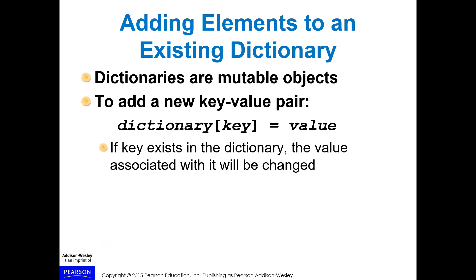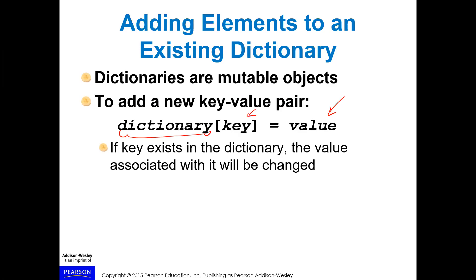You can add elements to a dictionary at any time. To add a new key-value pair, grab the dictionary name, specify the new unique key, and assign the value you want. If the key already exists in the dictionary, the value associated with it will be changed. So you can either add a new entry or update an existing one.